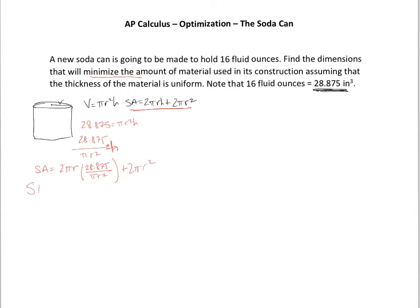This is S in terms of r because everything is in terms of r, and I want to take a derivative of that because I'm trying to minimize it. Cleaning it up: S(r) = 57.75/r + 2πr². When I multiply by 2, the pi's reduce and one of those r's goes away, giving 57.75/r + 2πr². Now let's take the derivative of that, and I'll end up with −57.75/r² + 4πr. I made the first term r to the negative 1, took the derivative, and it became r to the negative 2.